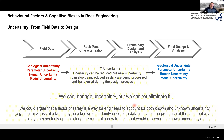In every project you transfer information from field data collection through to numerical analysis. During data transfer you are also transferring uncertainty. While you might reduce uncertainty through better data processing, you can also increase it by adding subjectivity or bias. If someone says 'I use this method because I like it' rather than because of a quantitative justification, that introduces human or model uncertainty. Preferentially using a system without justification means you're adding uncertainty, not removing it.